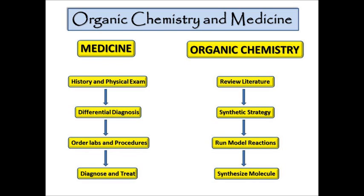The way organic chemistry is done in the research laboratory is very similar. Reviewing the literature is like the history and physical exam — you go through what has been done, what hasn't been done, and what can or cannot be done. From that comes a synthetic strategy with a variety of different synthetic pathways, similar to the differential diagnosis. Then you run model reactions to see what chemistry will and will not work on the substrates of interest, and ultimately synthesize the molecule, which parallels the diagnosis and treatment.